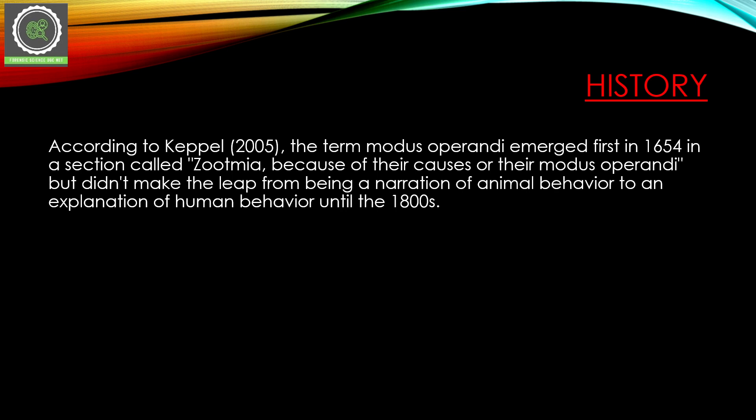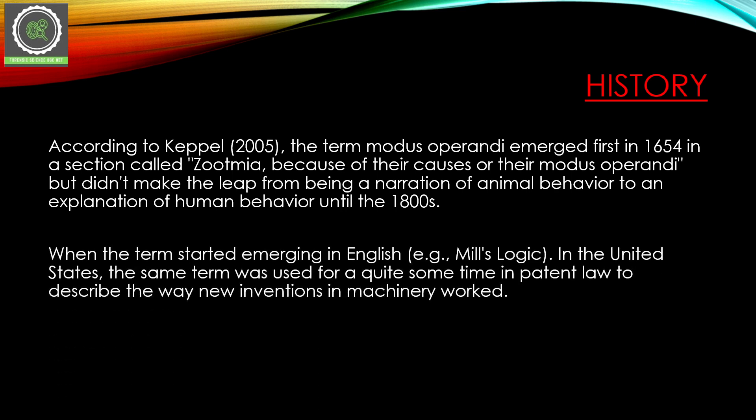So the word modus operandi changed its explanation over time — first emerging in 1654 in the Zootmia section. When the term started emerging in English, for example in Mill's Logic, in the United States the same term was also used for quite some time in patent law to describe the way new inventions in the machinery world worked.